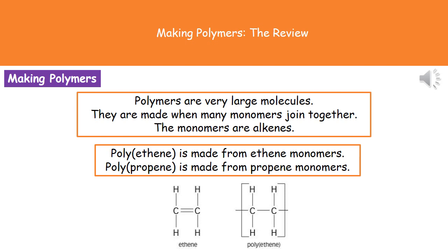If we were asked to turn that into a polymer, what we do is remove the double bond from between the carbons, draw it as a single bond, then put two bonds sticking out from the carbons, and put a bracket around it, as you can see. It's also good practice to write a little n in the bottom right corner of the bracket, just so that we know that it's repeated many times over.